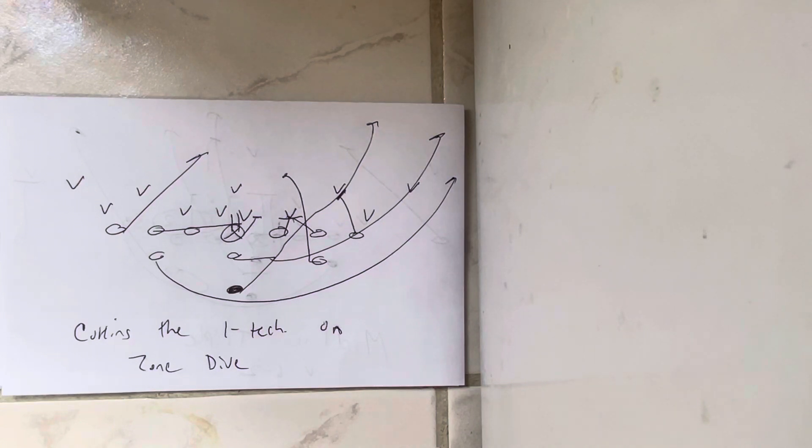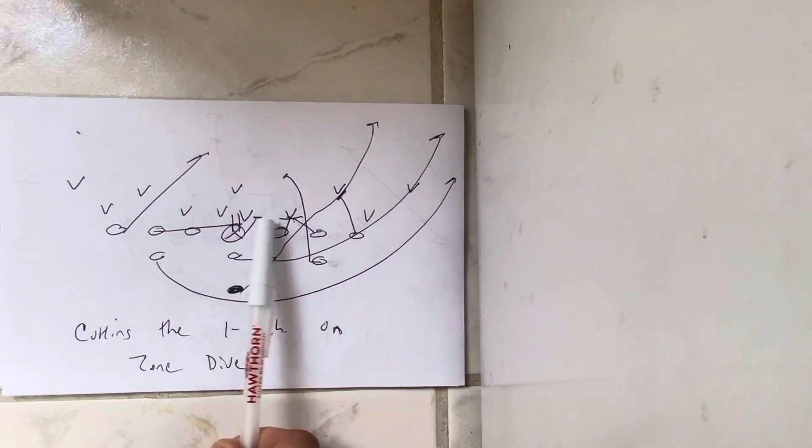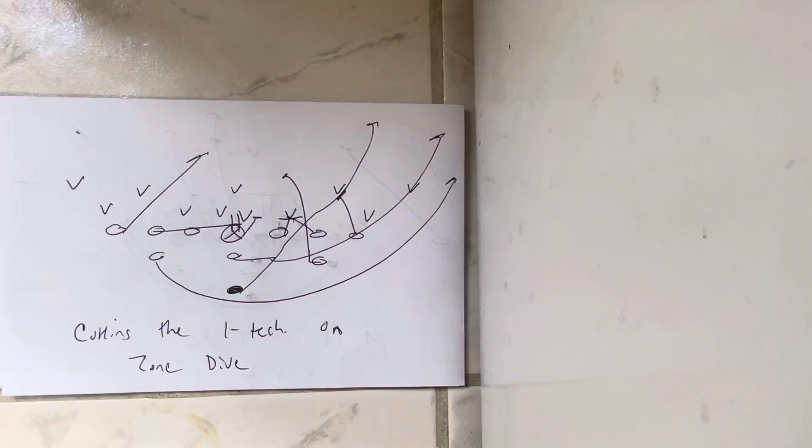He'll get his backside shoulder through the playside knee of number one and just the side of it and go to the ground so that if this guy wants to go that way, he's going to fall over. And if he wants to go up the field, he's going to get scooped.